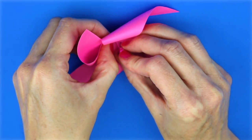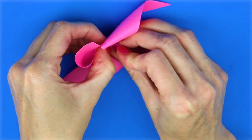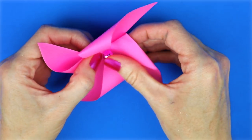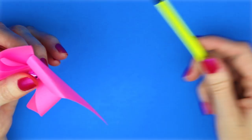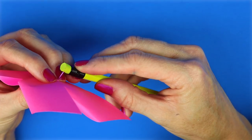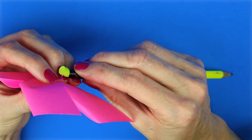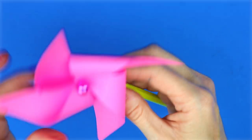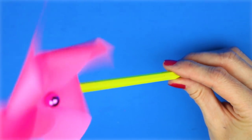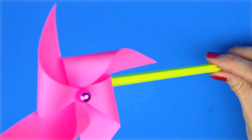Then I'm going to use a pencil and poke the push pin through the eraser, making sure that it doesn't poke all the way through. And now you have a spinning pinwheel pencil.